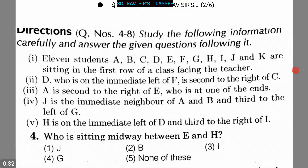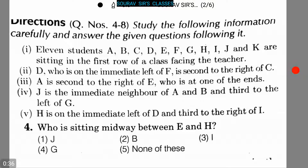Here is our question. Eleven students A, B, C, D, E, F, G, H, I, J, and K are sitting in the first row of a class facing the teacher. D, who is on the immediate left of F, is second to the right of C. A is second to the right of E, who is at one of the ends. J is the immediate neighbor of A and B, and third to the left of G. H is on the immediate left of D and third to the right of I.